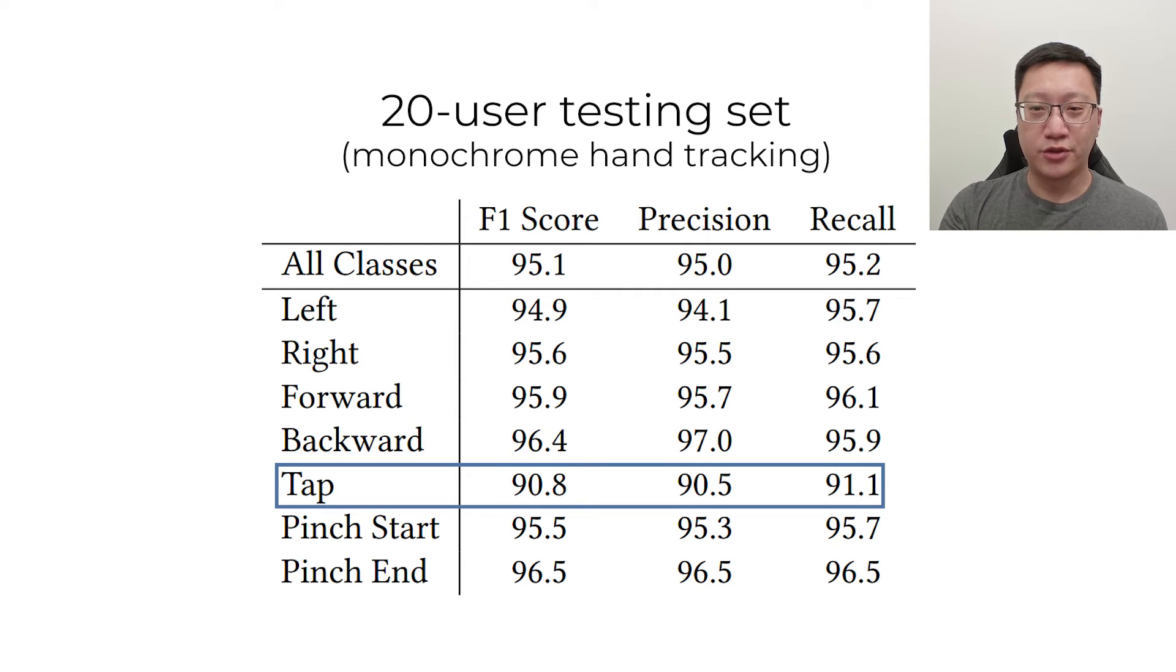Thumb tap was the worst performing gesture. Two possible reasons for this include tap is a fairly small motion that may be impacted by hand tracking quality. Tracking jitter or tracking not resolving the thumb motion may lead to recognition errors.